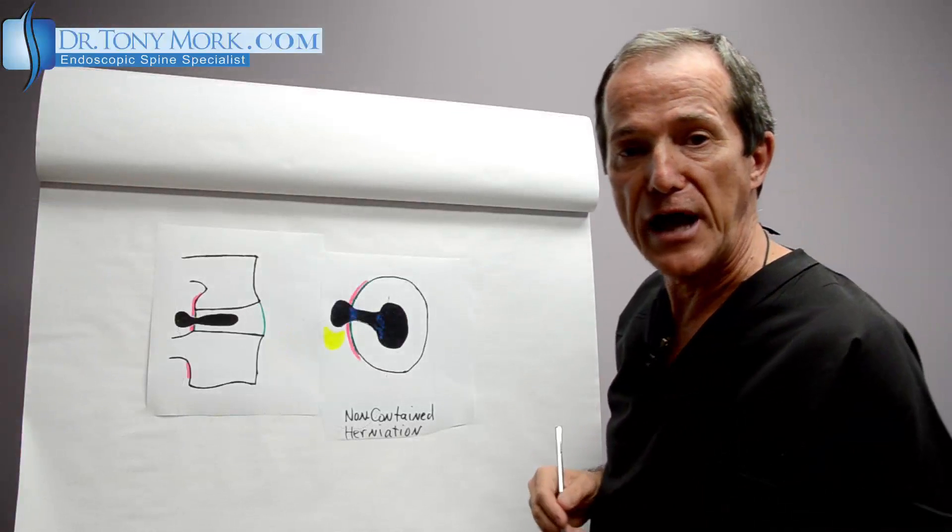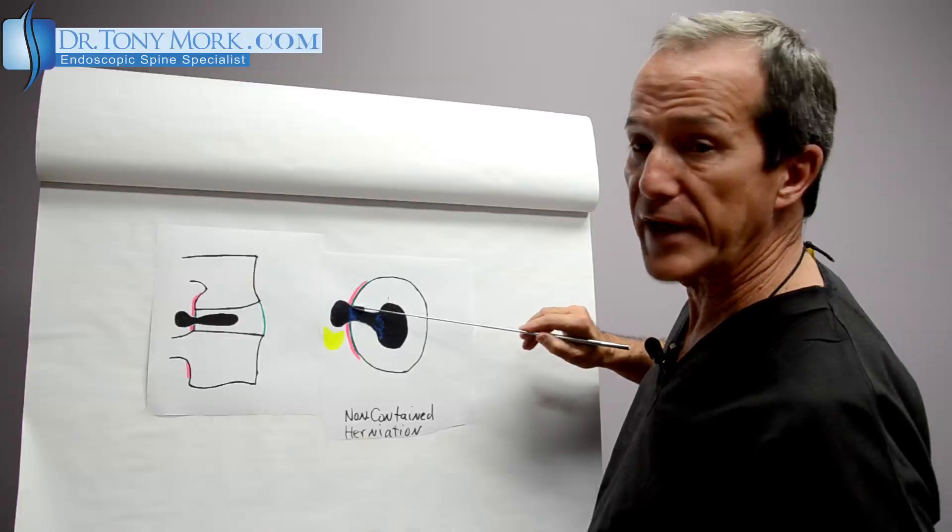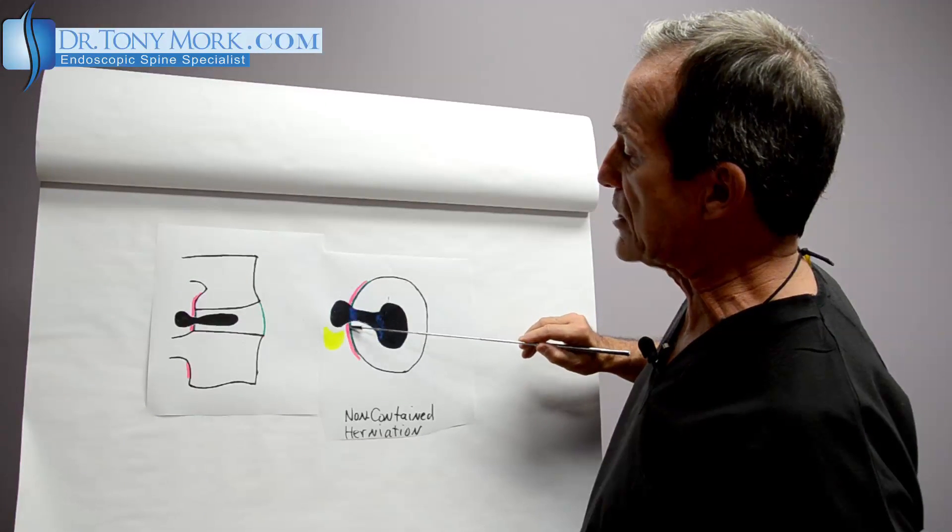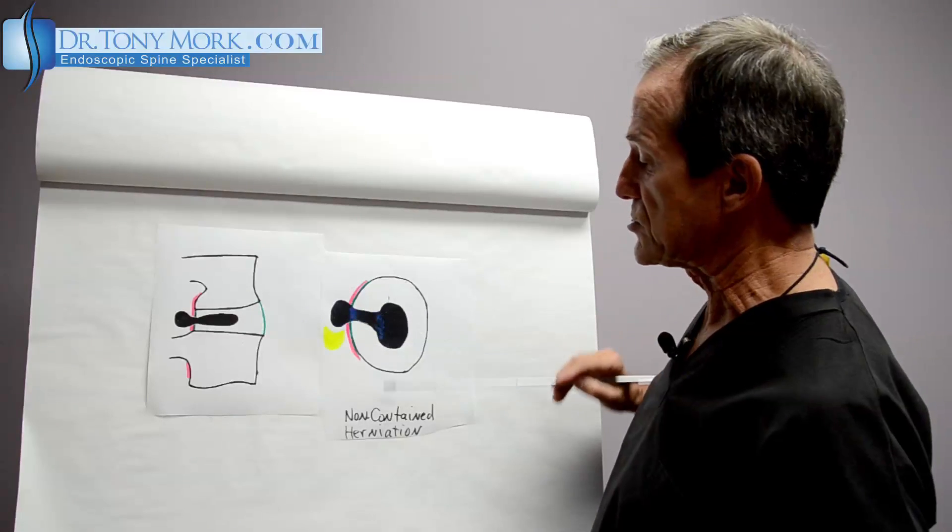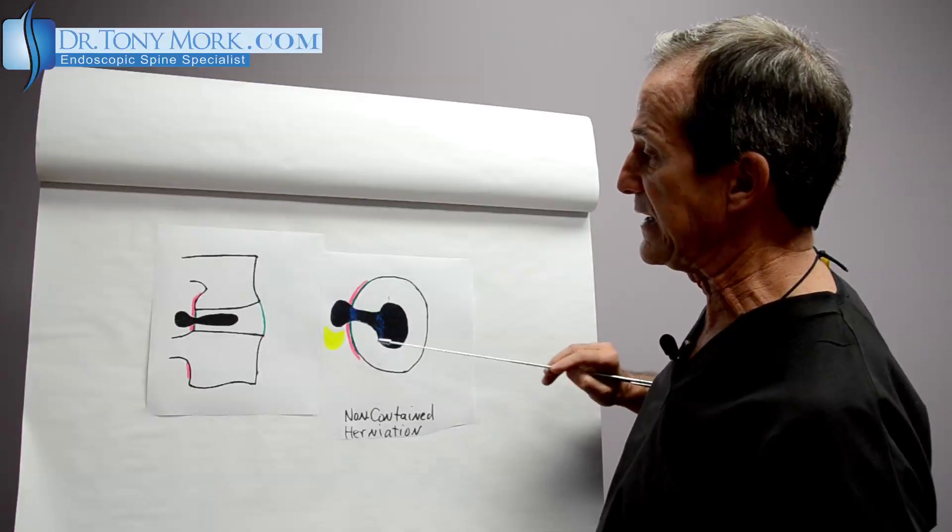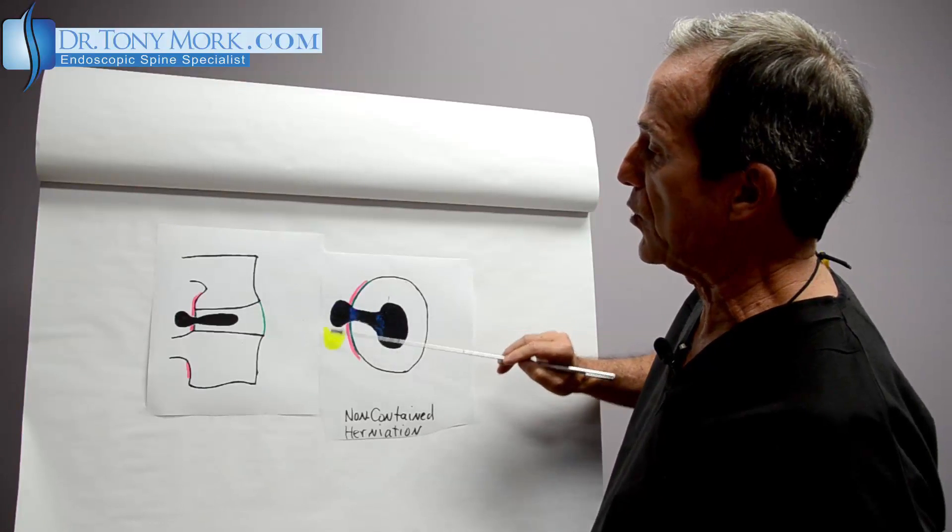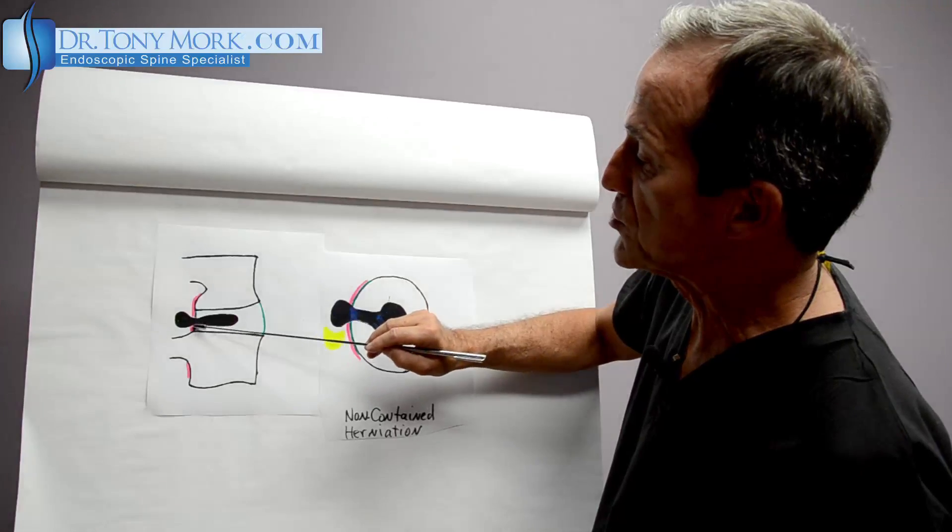This is what we call a non-contained tear. Again, we've got the nucleus extends out through an annular tear. And then in this case, it actually extends out beyond the pink, which is beyond the posterior longitudinal ligament. So this is non-contained. Okay, so it goes out here. Again, it can still indent the spinal cord here. It gets out beyond the pink or the posterior longitudinal ligament. It's not contained anymore.